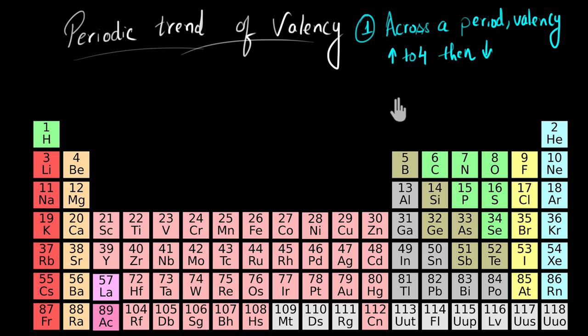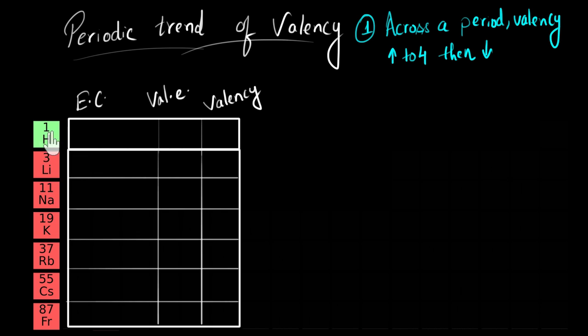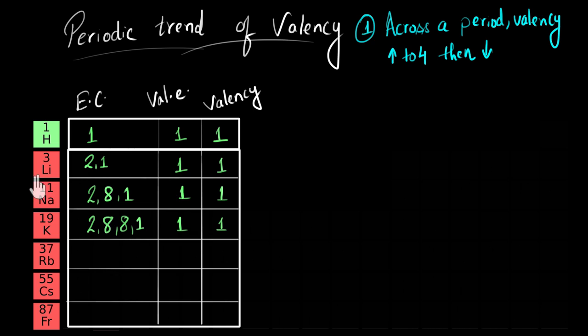Now let's see how the valency changes as we go down a group. Let's focus on the elements of group one. Hydrogen is not technically in group one, but I'm still including it — you'll see why. Hydrogen has only one electron; if it gains one more electron it will have the electronic configuration of the noble gas helium, so its valency is one. Lithium's configuration is 2,1 — if it loses one electron it will have the noble gas configuration, so its valency is one. Sodium's electronic configuration is 2,8,1; if it loses one electron it will have a complete octet just like the noble gas neon — so its valency is one. Similarly, potassium's valency is also one.